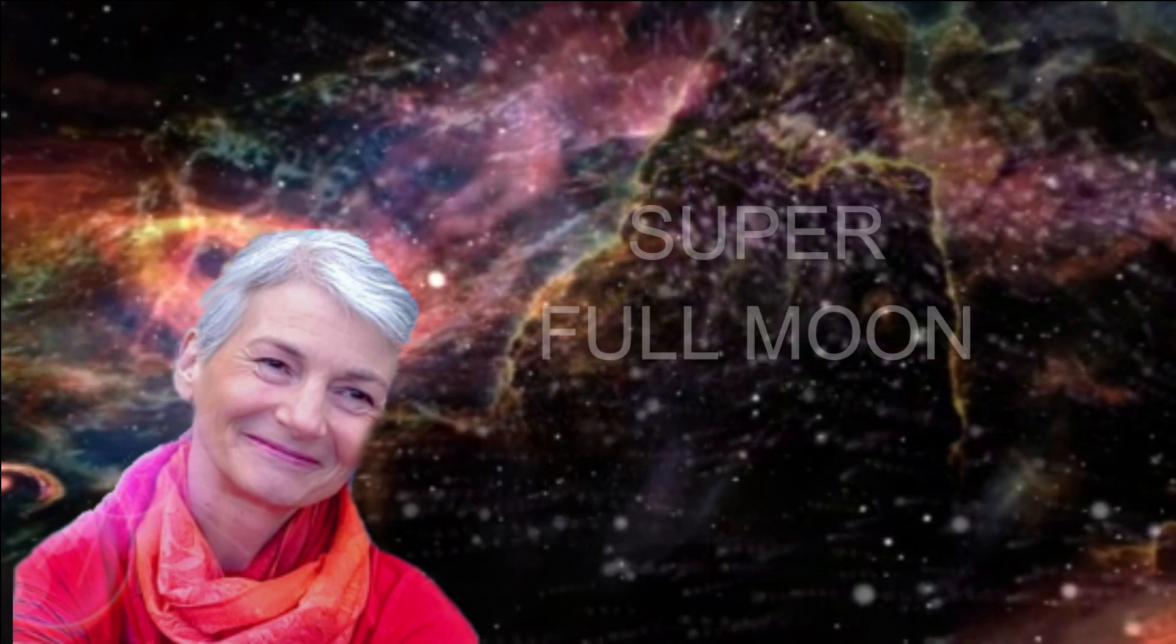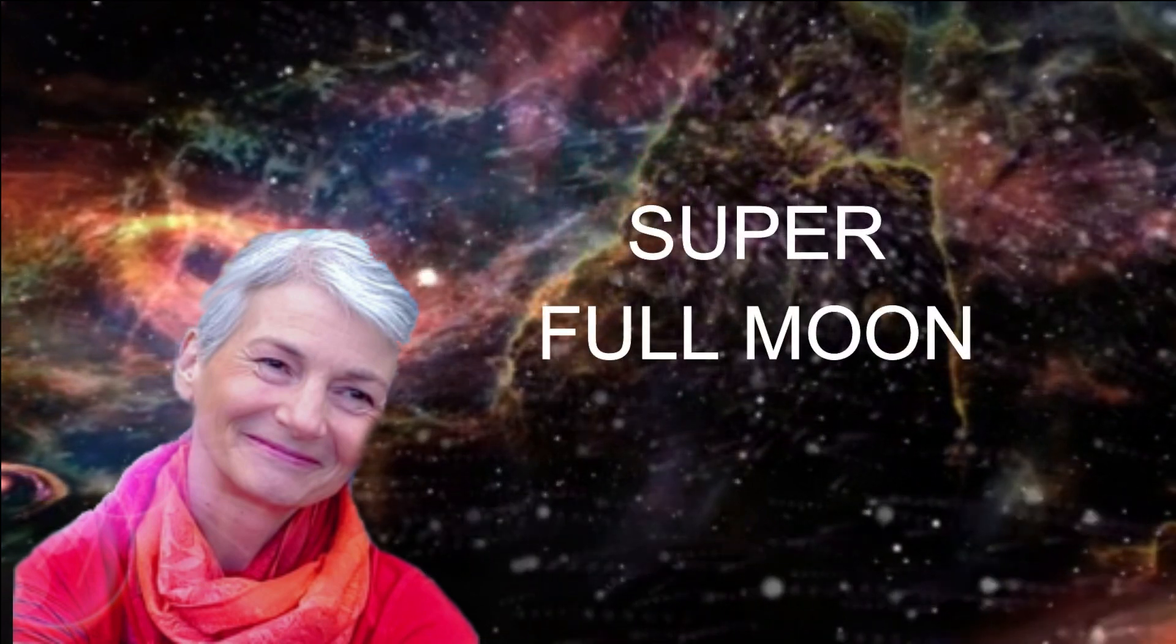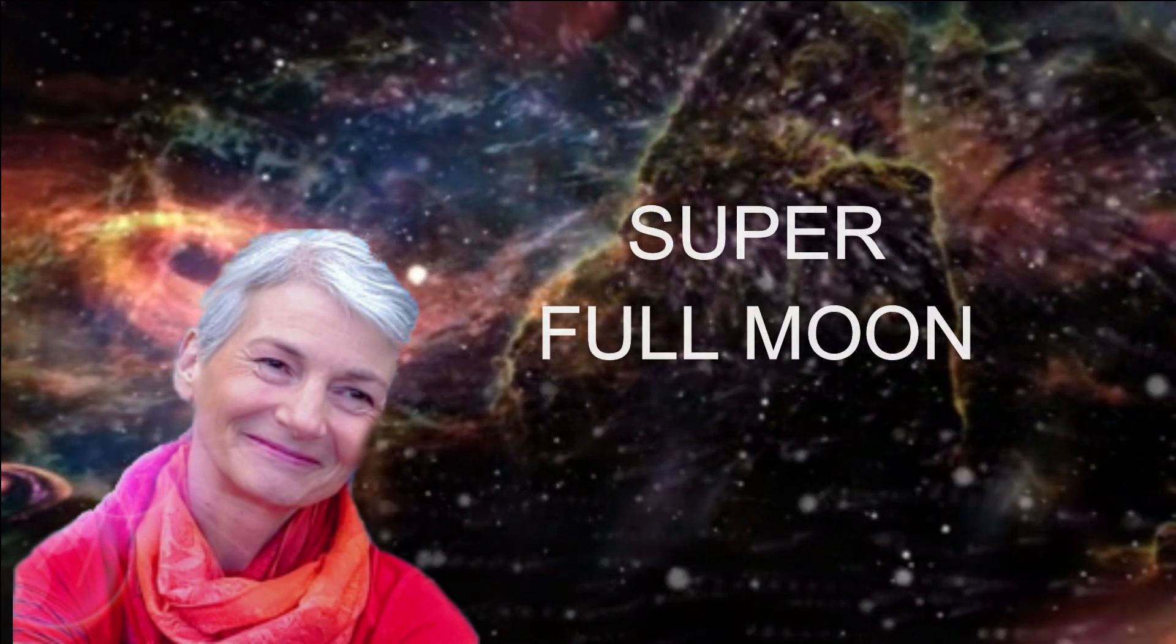August's full moon is a supermoon because it occurs when the moon is at perigee, the closest point to the Earth in its elliptical orbit around our planet. The proximity of the moon to Earth means that it will appear larger than most full moons and will also have greater impact energetically.